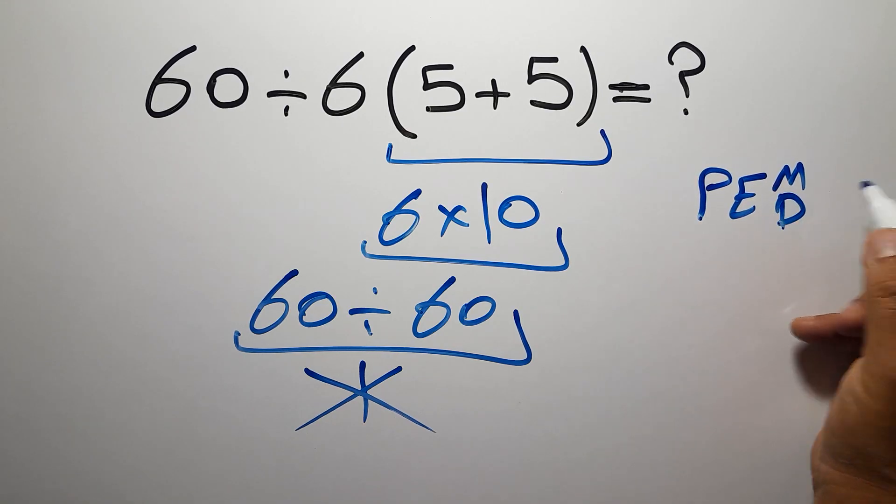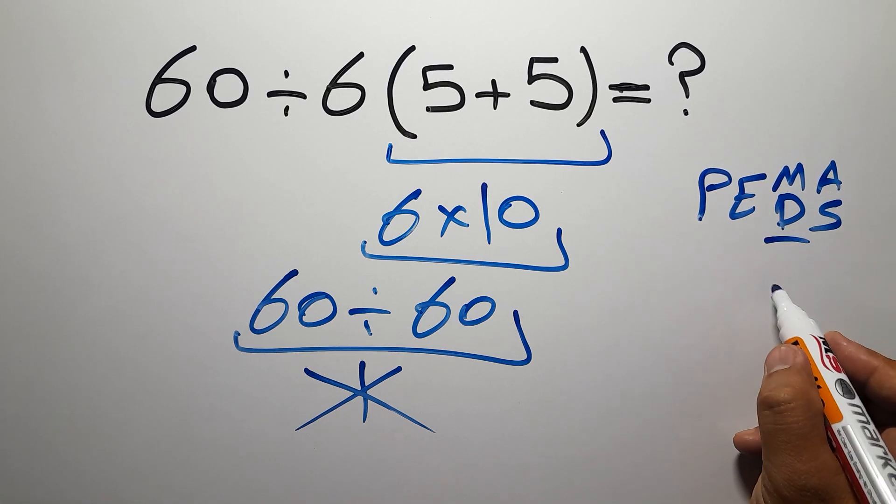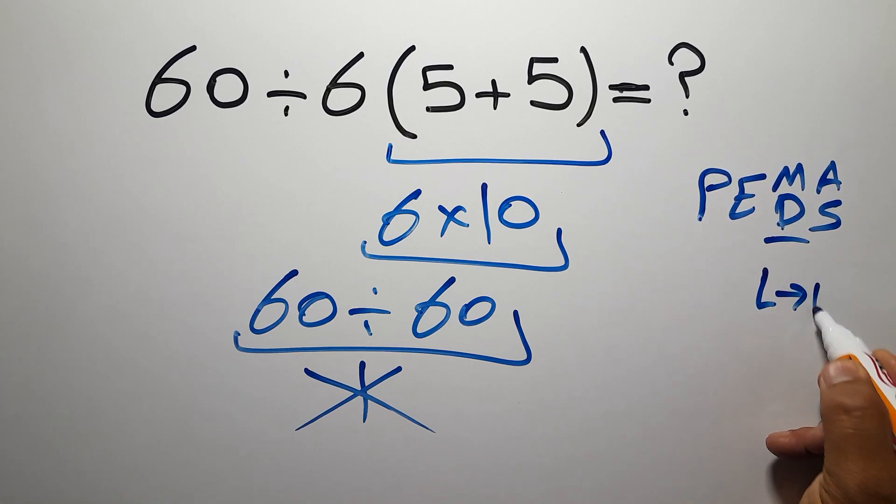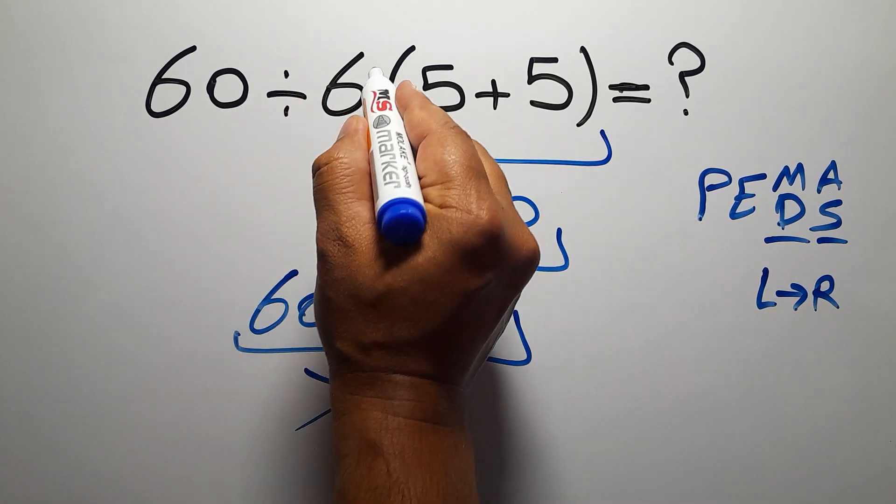Remember that multiplication and division have equal priority and we have to work from left to right. The same applies to addition and subtraction. In this expression we have one division, one multiplication, and this parentheses.